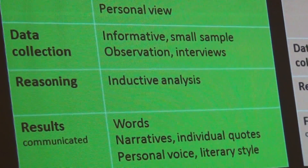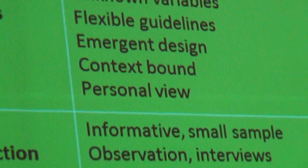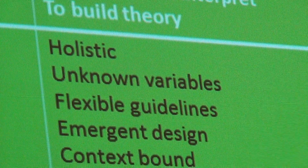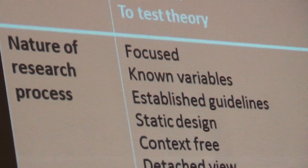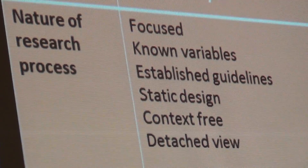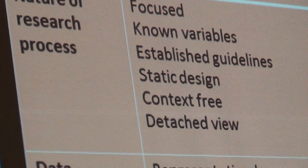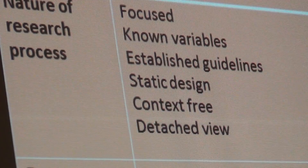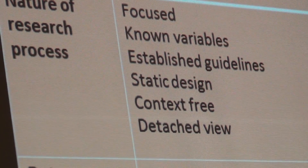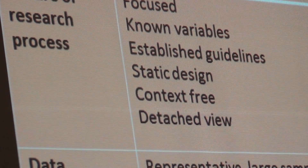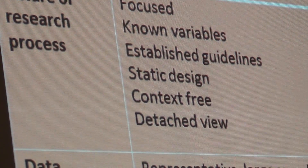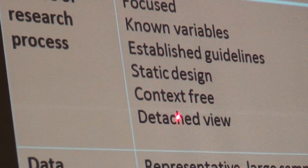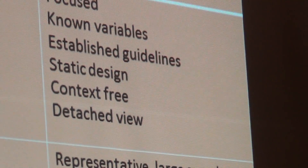On our quantitative side, in our universe, the nature of the research process is very focused. We focus on variables — variables are the thing. You've got to have variables, and you've got to identify which are the dependent and which are the independent variables. The whole research is structured and written out, and you just follow the line. There's nothing unexpected coming through. It's very static, so the design stays the same, and you have a very objective view — you stand back and you observe.